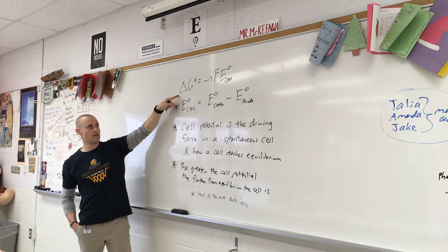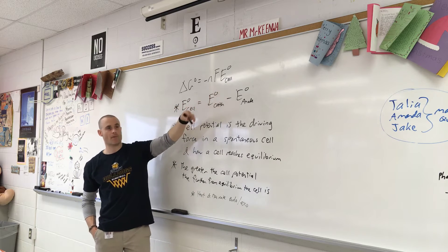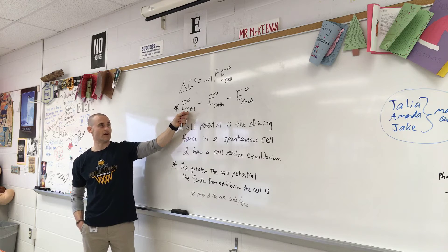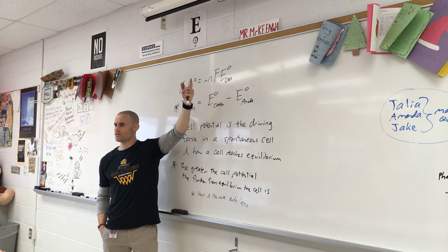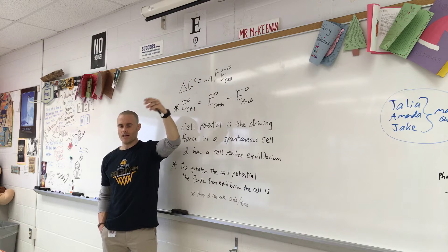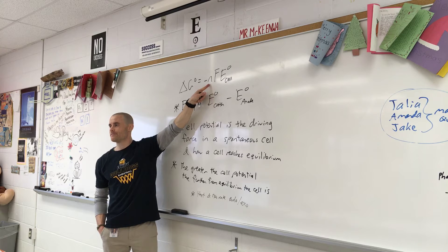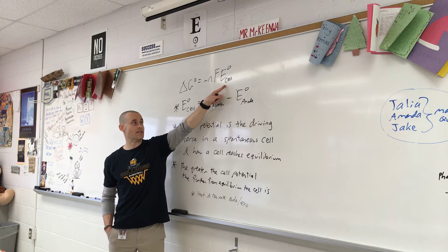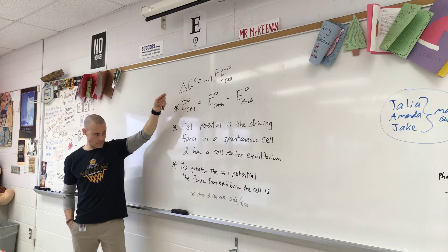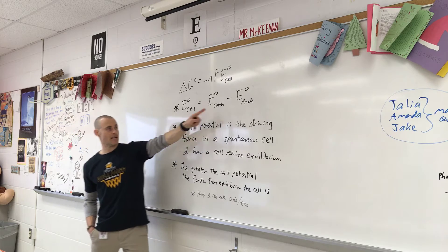F is Faraday's constant — about 96,500 coulombs per mole. N is moles of electrons being transferred. The more electrons that are transferred, the higher the voltage. The bigger these numbers, the larger the negative delta G, and that's the further away from equilibrium — the longer it's going to take to reach equilibrium. The cell potential is the difference in potential between your anode and cathode that drives the release of electrons.